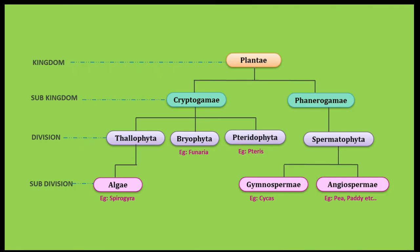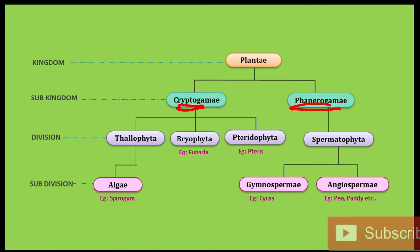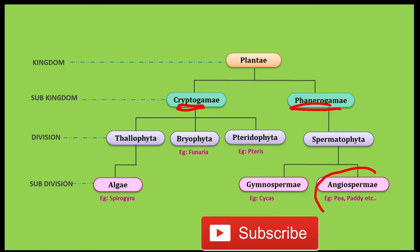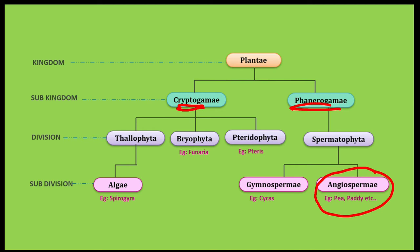Plantae is divided into two sub-divisions: Cryptogamic and Phanerogamic. The Phanerogamic Plant Parasite belongs to the Angiospermae. These are plants that take nutrition from other plants — they are called Phanerogamic Plant Parasites.